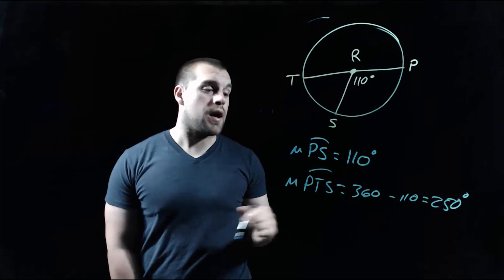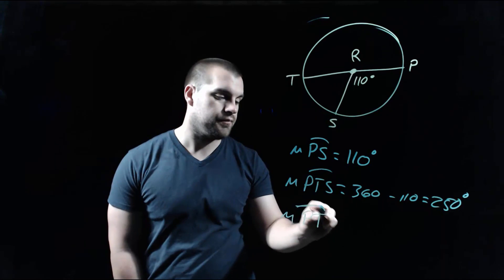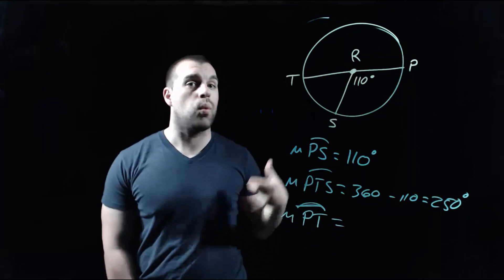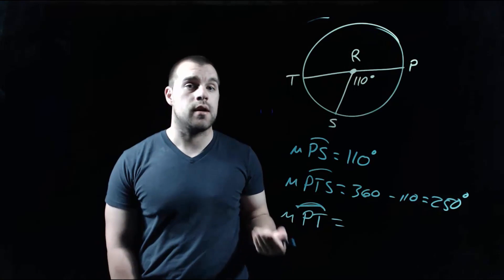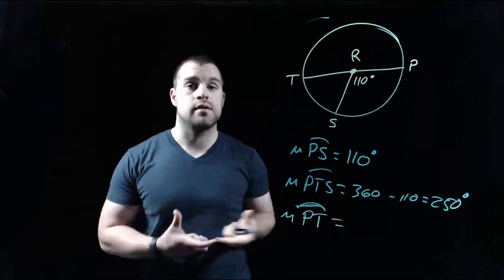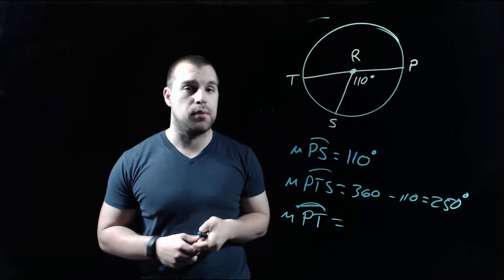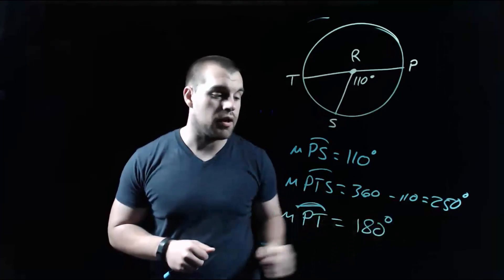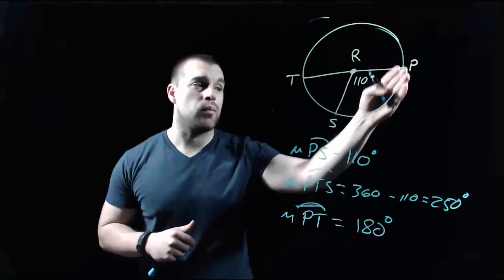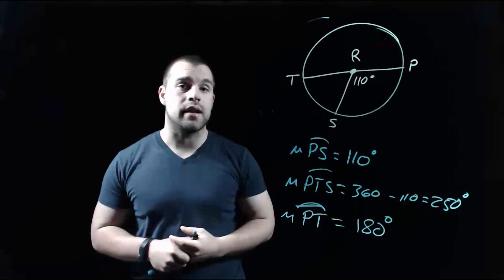The last arc to find is the arc that goes from P to T. Since PT is a diameter of our circle, a diameter splits a circle exactly in half. A full circle is 360 degrees, so half of that would be a 180-degree arc. So the arc from P to T, or even going the other way from P to S to T, is a semicircle since its measure is exactly 180 degrees.